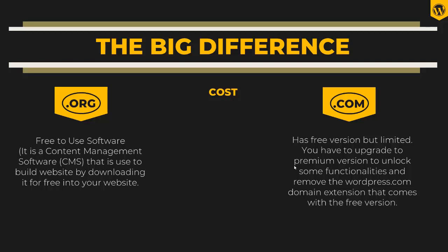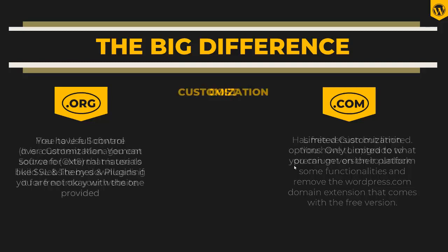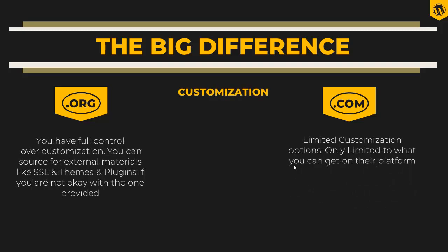When it comes to customization, you have full control in .org. You can source external materials like SSL, themes, and plugins if you are not satisfied with what the platform provides. With .com, you have limited customization options — you are only limited to what the platform can provide. So .com has limitations; .org has no limitation.